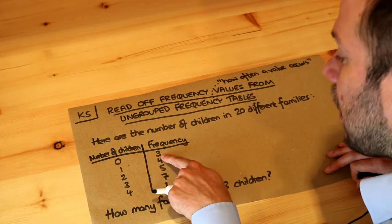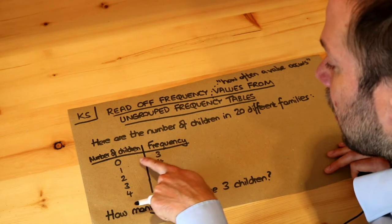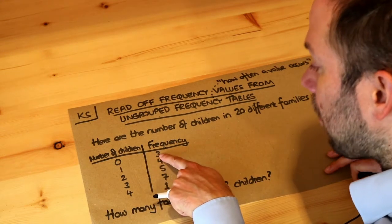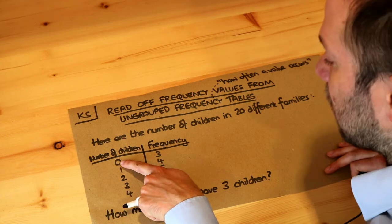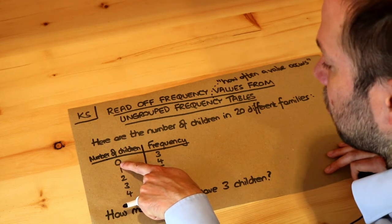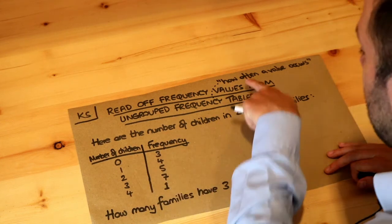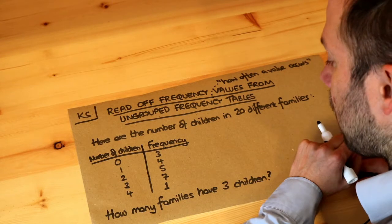So this three, for example, tells us there are three families with zero children, because the number of times we see families with zero children is three — it's how often the value occurs.